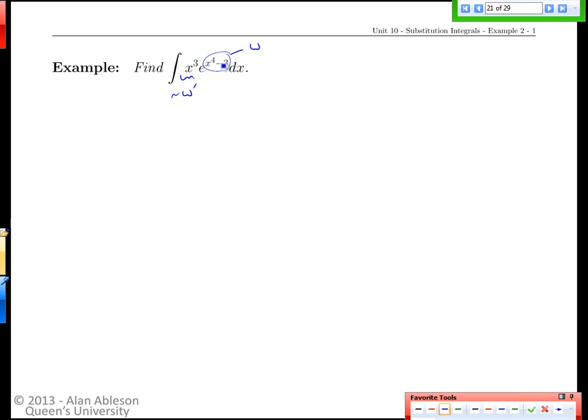If we select w to be the exponent here we're going to get to divide later on by x cubed, that'll cancel out the x cubed and we should have a simpler integral. So this is a classic substitution type integral where the choice of w is fairly clear cut.